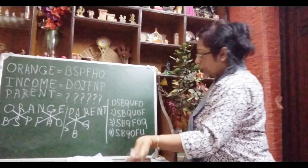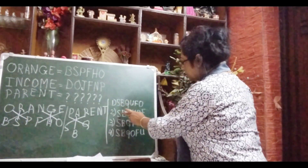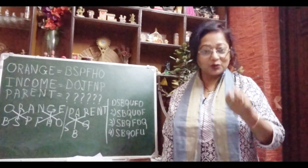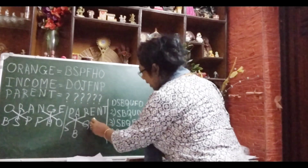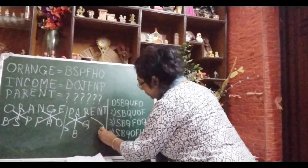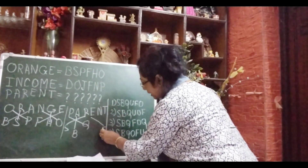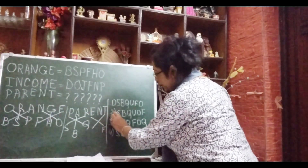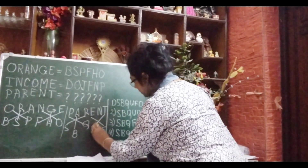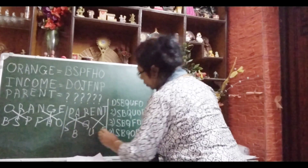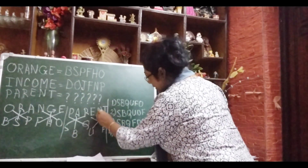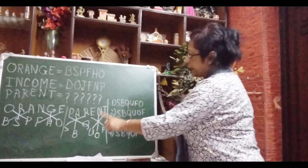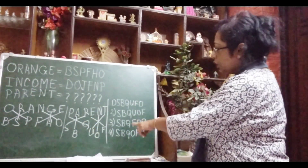So we got S, B, Q. See — S, B, Q is there in the options too. All four options have S, B, Q, so we have to do more. After E what comes? F. Then after T — cross T — what comes? U. Then N — after N what comes? O. So our full answer is S, B, Q, U, O, F. That is option number 2: S-B-Q-U-O-F.